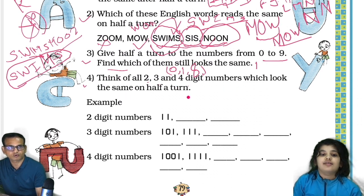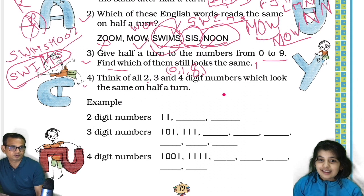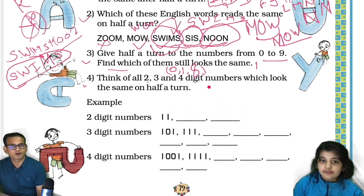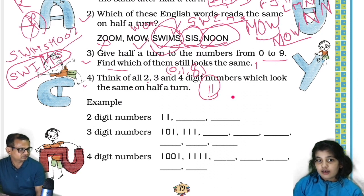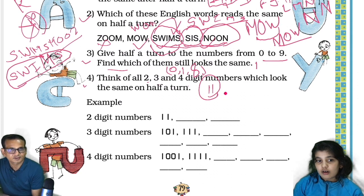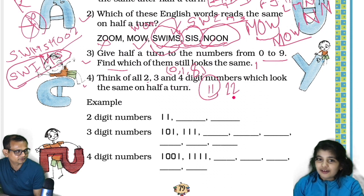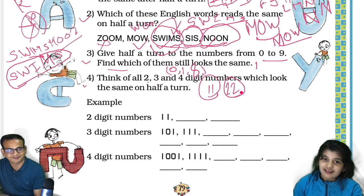Now fourth: think of all two, three, and four digit numbers which look the same on half a turn. Two digit numbers — tell me Avisha. Eleven — 11 looks the same after half a turn. And... 18 turned gives 81, and 81 turned gives 18 — so those are not the same. What about 11? Yes, 11 is correct.